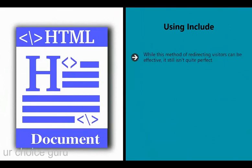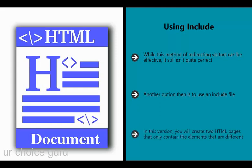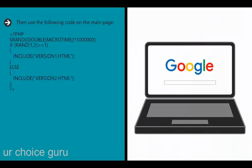While the redirect method can be effective, it still isn't quite perfect - you still have two different types of web pages, and the URL in the address bar will be different, which could confuse your users or result in action from Google. Another option is to use an include file, which means the page will populate itself with content from another page, allowing a blank template to become your new version. You create two HTML pages containing only the elements that are different - for instance, save them as version1.htm and version2.html - and then use include code on the main page.